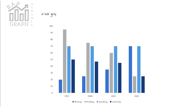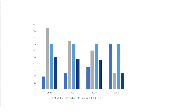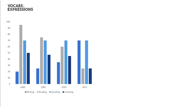This bar graph shows data changes over time — 1995 to 2002 — so we need to use words that indicate changes. We can use specific vocabulary for upward and downward movements with the past and present forms.